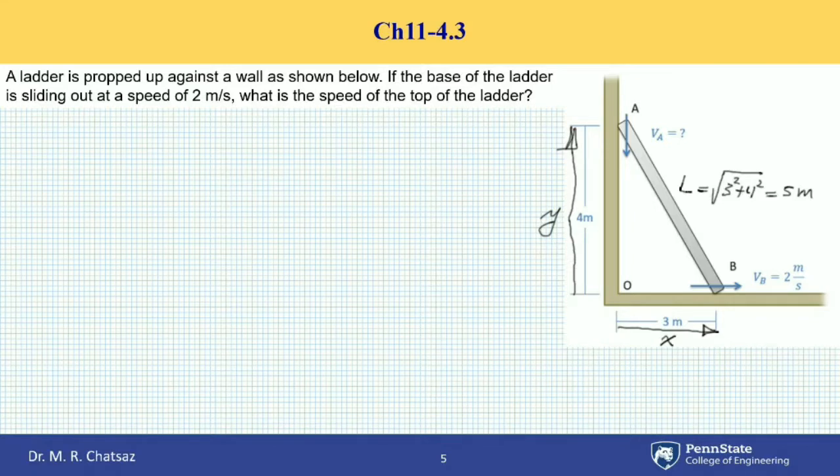Since we have a right triangle, we can write the constraint equation using the Pythagorean theorem as X squared plus Y squared equal to L squared.